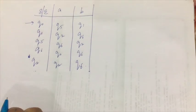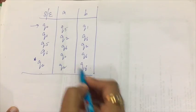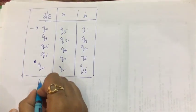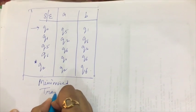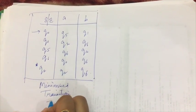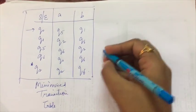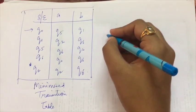So now this obviously is the minimized transition table for my given big DFA. So now what I'm gonna do is make a transition diagram, and the transition diagram is as follows.